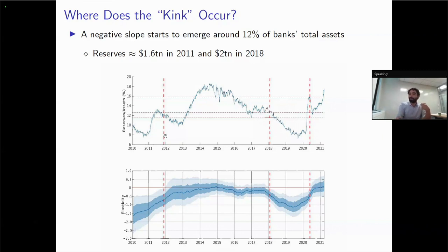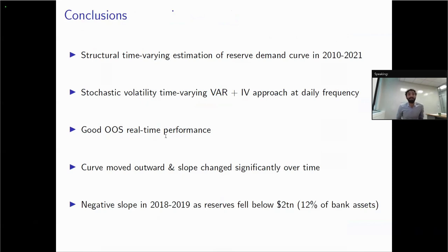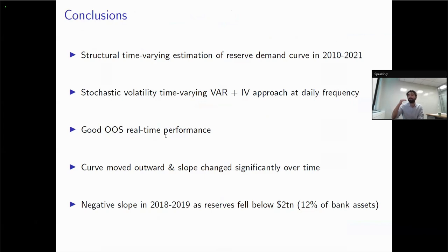To wrap up: in this paper we propose a structural time-varying estimation of the reserve demand curve over 2010 to 2021, encompassing the whole post-crisis period, using a combination of a stochastic volatility time-varying forecasting model and an instrumental variable approach applied at daily frequency. The most important findings are that the reserve demand curve has moved outward over time, consistent with drivers of upward pressure in banks' precautionary demand for reserves, and its slope has changed significantly — in particular in 2018–2019 we estimate a significantly negative slope even when reserves were above two trillion.